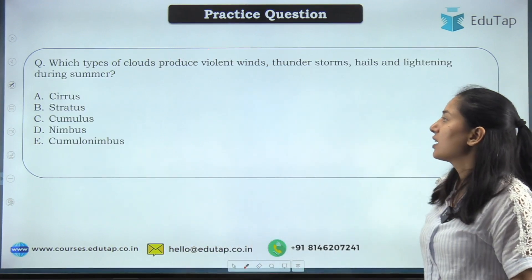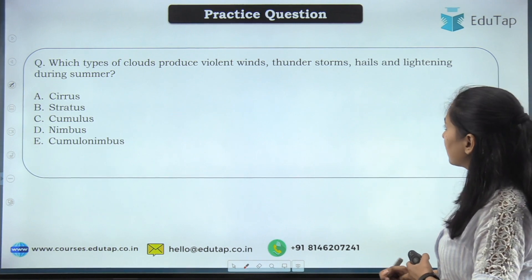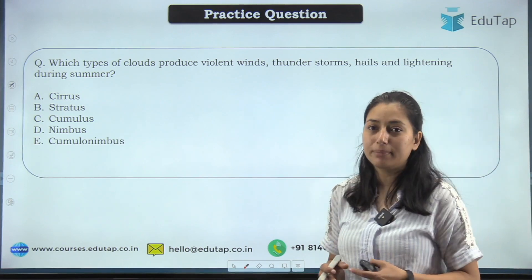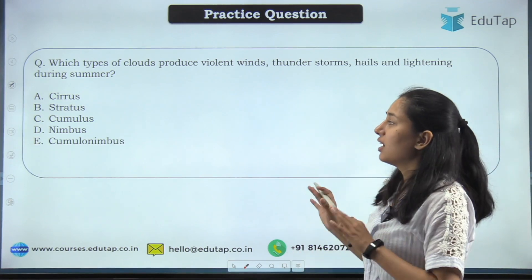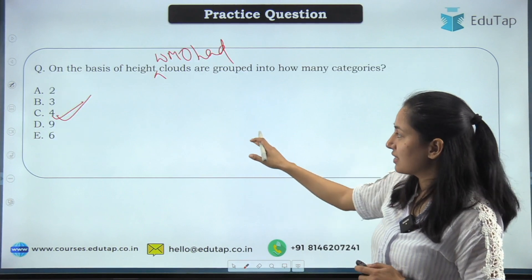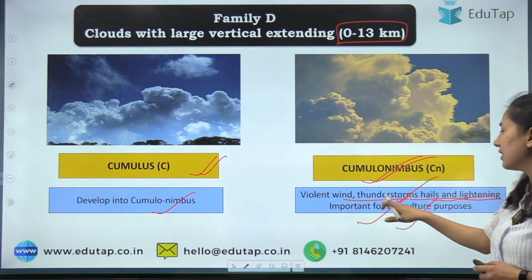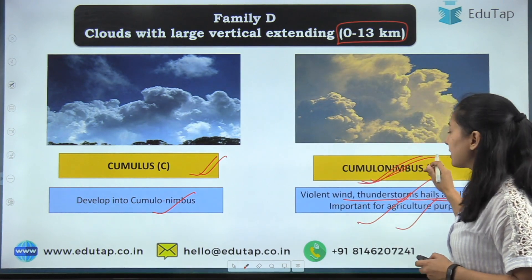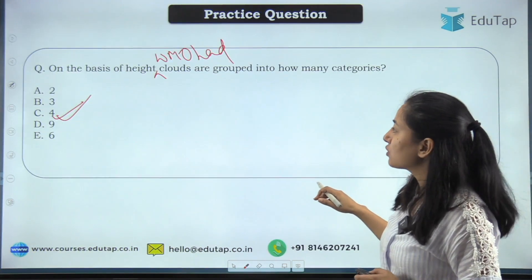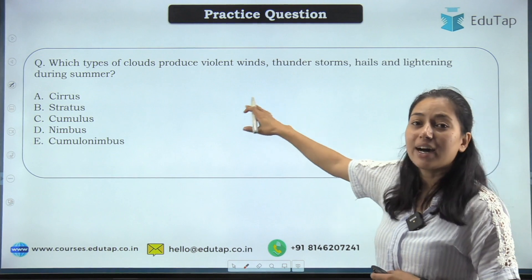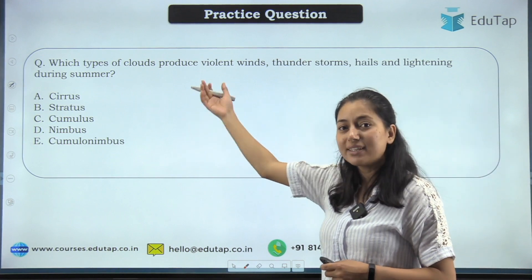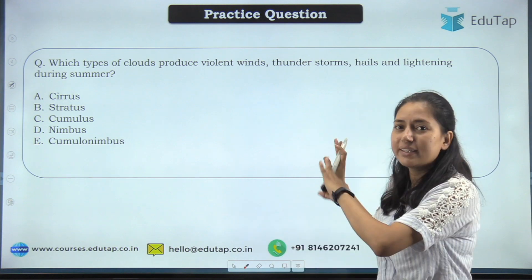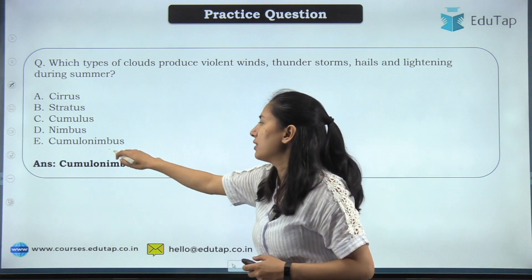Next question: which type of cloud produces violent wind, thunderstorm, hail, and lightning during summer? Options: altostratus, altocumulus, nimbus, cumulonimbus. We discussed this — violent winds, thunderstorms, hail, and lightning are all associated with cumulonimbus, which is also agriculturally important. The answer is cumulonimbus. Note that the examiner may frame this question in different ways, so be prepared.